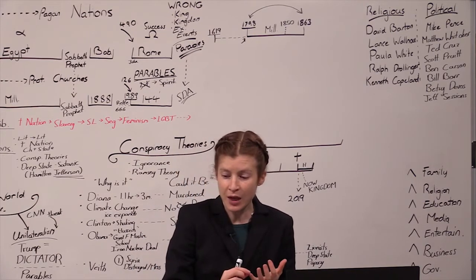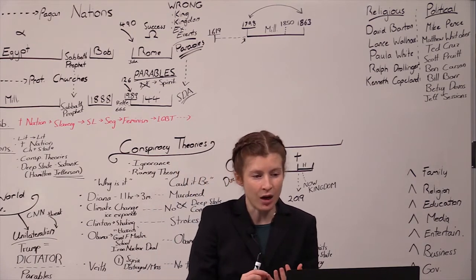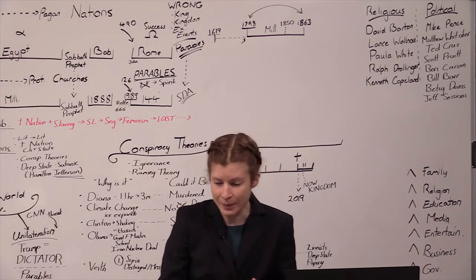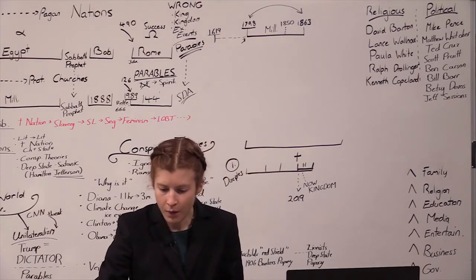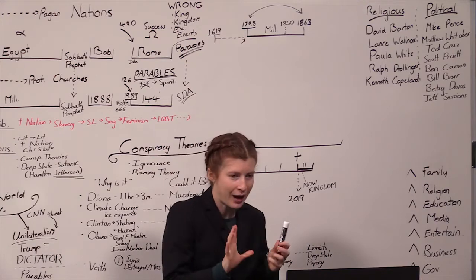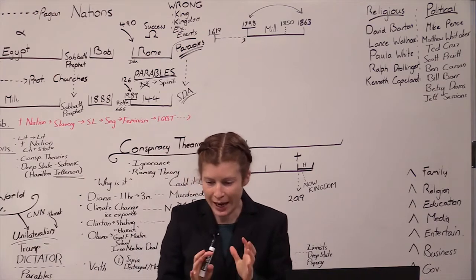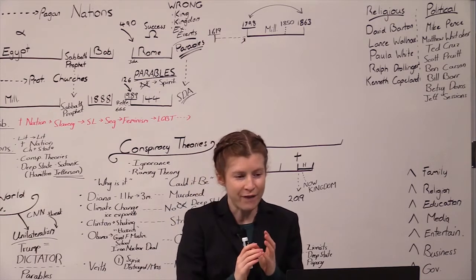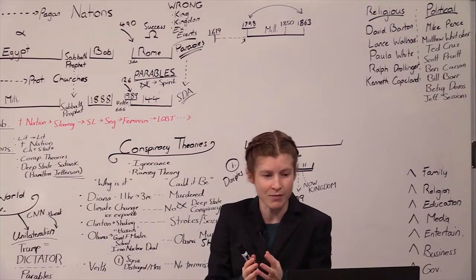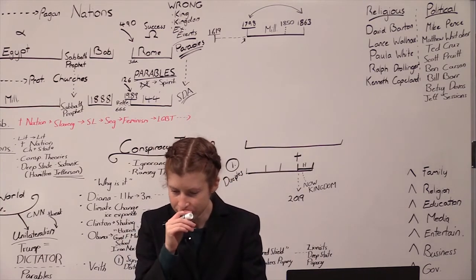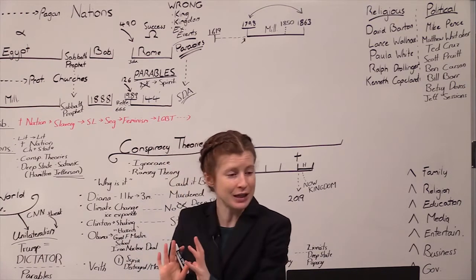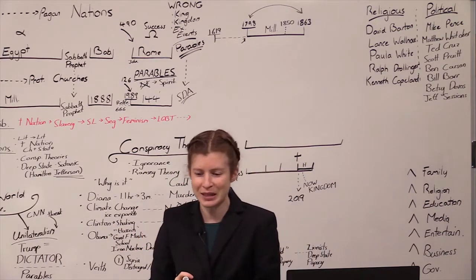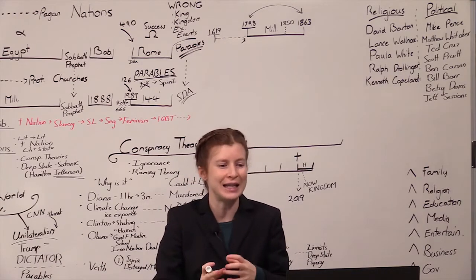So in 1619 you have these two issues happening within a few weeks of time. First the first democratic beginning of government, second the introduction of British slavery to America. One of the difficulties with this history is we're weaving different threads together at the same time.